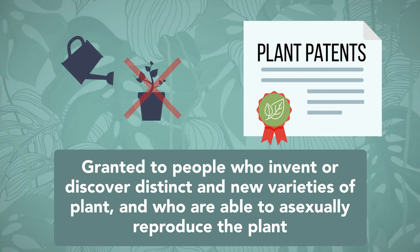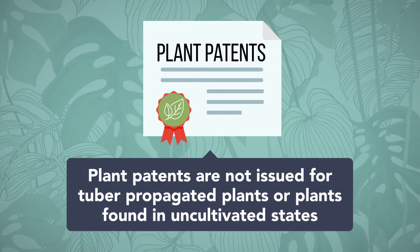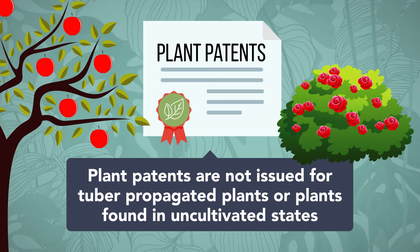Rather, utility patents apply to seeds, including those that support the genetically modified organism industry. In addition, plant patents are not issued for tuber-propagated plants or plants found in uncultivated states. Two common examples of plant patents include apple trees and rose bushes derived by cutting pieces of the stems.